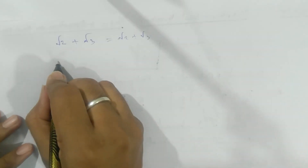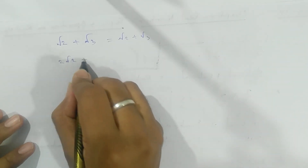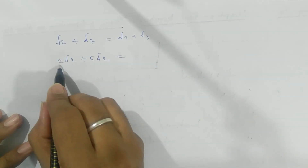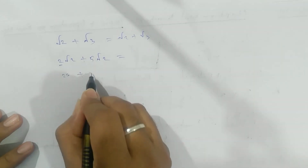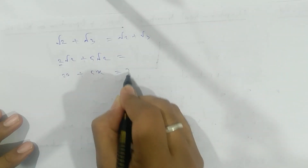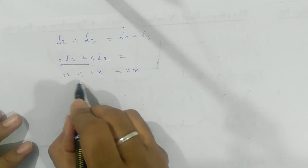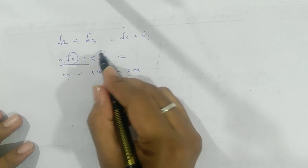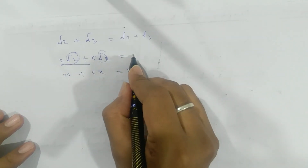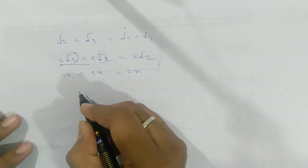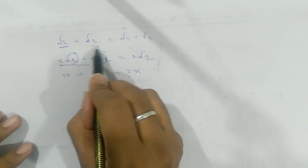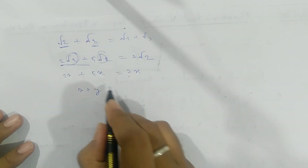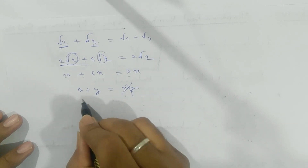Now if we take 2√2 and 5√2, then the answer — think of it like 2x plus 5x equals 7x — similarly here we get 7√2. The same way we add in algebra, we treat √2 as x. But if we have √2 and √3, they are not like terms — just as x plus y cannot be simplified — so the answer remains √2 + √3.